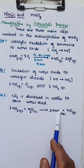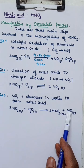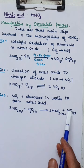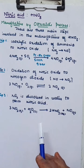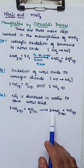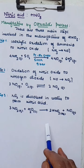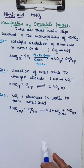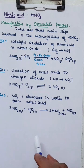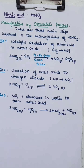Nitric acid is formed along with nitric oxide in gaseous form. This nitric oxide is recycled, and the aqueous nitric acid is concentrated by fractional distillation up to 68% by mass. It can then be concentrated up to 98% using concentrated sulfuric acid, because concentrated sulfuric acid is a dehydrating agent.